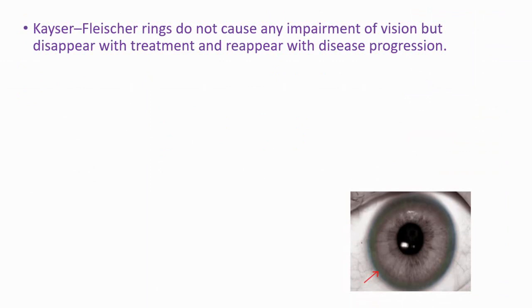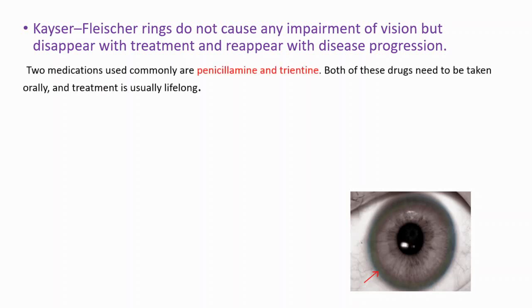These rings do not cause any impairment of vision, but disappear with treatment and reappear with disease progression. Generally, we are using two medications to treat Wilson disease, and those are penicillamine and trientine. Both of these drugs need to be taken orally and treatment is usually lifelong.